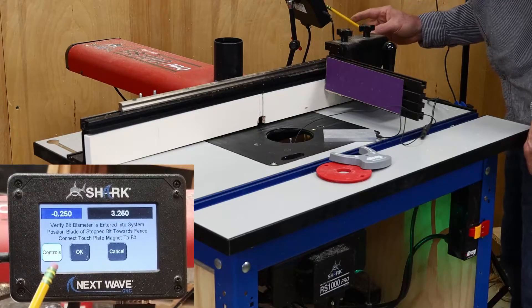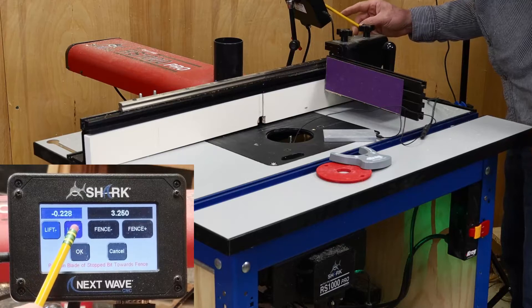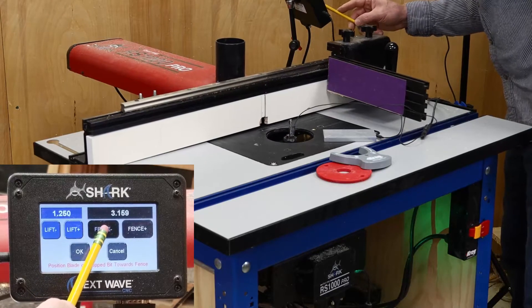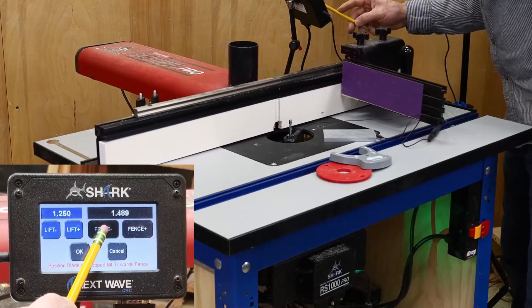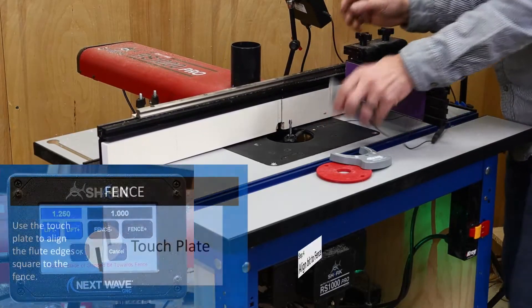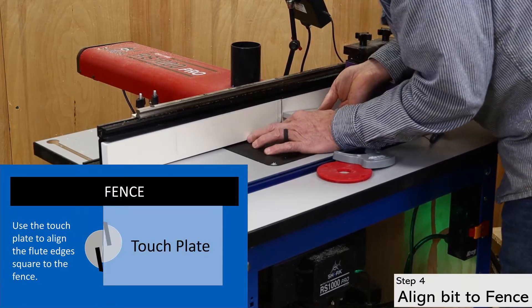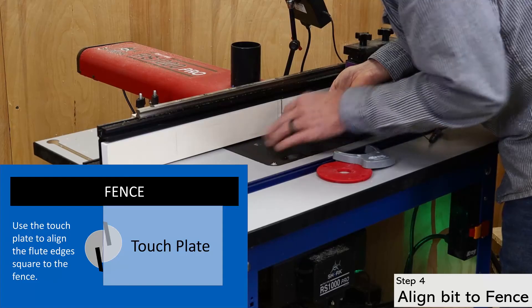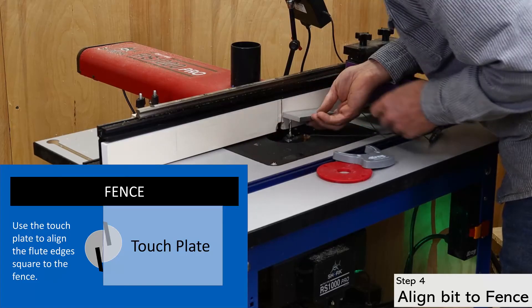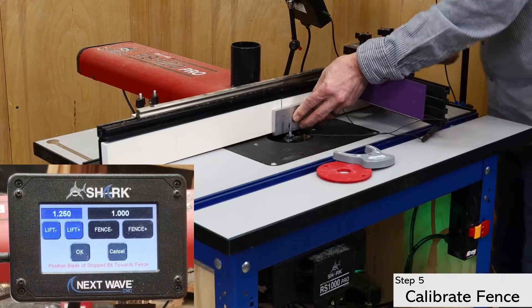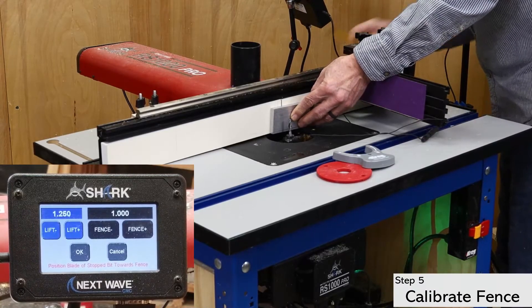Once again, use the white control button to open up the control panel and raise the bit above the table as well as bring the fence forward. Use the touch plate on top of the bit to align the flutes square with the fence. This ensures that the high point of the flute is closest to the fence. This in return will give you the most accurate results when calibrating the fence. Position the plate between the fence and the bit and proceed with the fence calibration routine.